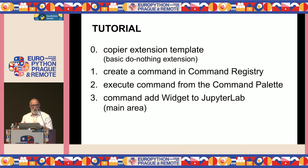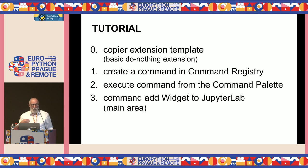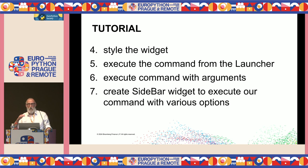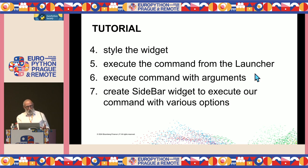Here are the tutorial steps: Step zero — create a basic do-nothing extension from a template. Then modify the extension to put a command in the command registry. Then execute that command from the command palette, modify the command to create a widget on the screen, style that widget, execute from elsewhere in JupyterLab, pass arguments to commands to make it behave differently for different users, and finally create a sidebar widget with buttons to execute commands in different ways.